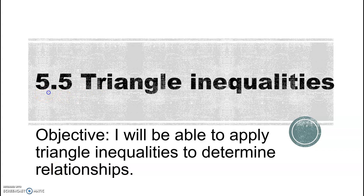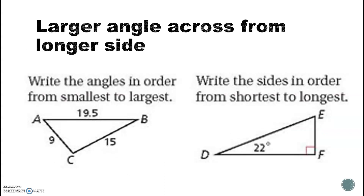Today we're going to move into section 5.5 on triangle inequalities. The first concept is the partnership between angles and sides: across from the biggest side should be your biggest angle, and across from your biggest angle should be your biggest side. It works both ways.